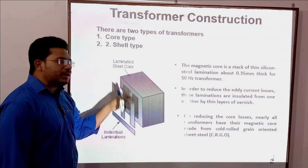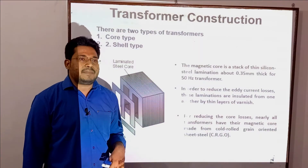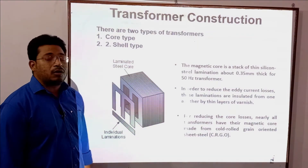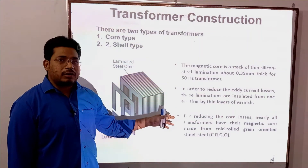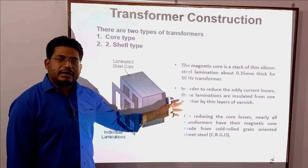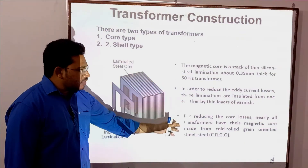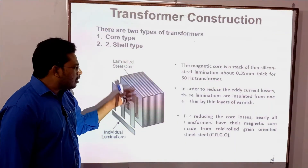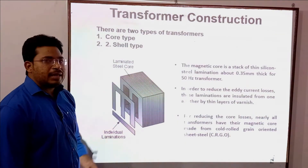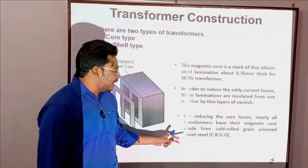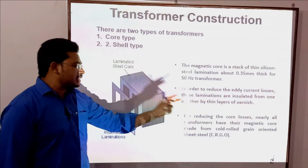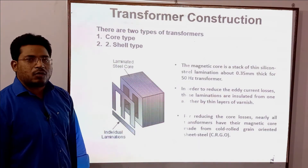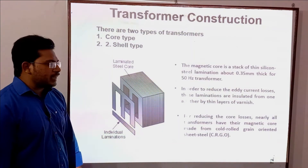For the insulating material between laminations, we use materials with high magnetic permeability to minimize losses — what we call core loss. Core loss will be discussed in detail in a later class. The material used to minimize core losses is cold-rolled grain-oriented steel.